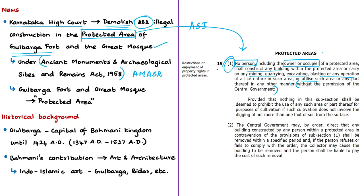The Archaeological Survey of India found that many illegal constructions were carried out in the protected area of Gulbarga fort. Based on subsection 2 of section 19 of this act, the court ordered demolition of such illegal constructions. Section 19 subsection 2 mentions that any building constructed in contravention of subsection 1 shall be removed within a specified period. Based on this provision, the High Court has ordered the demolition of illegal constructions in the protected area of Gulbarga fort.